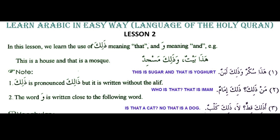The second thing is the word wa is written close to the following word. Usually, the word wa is used for linking two things or two sentences.